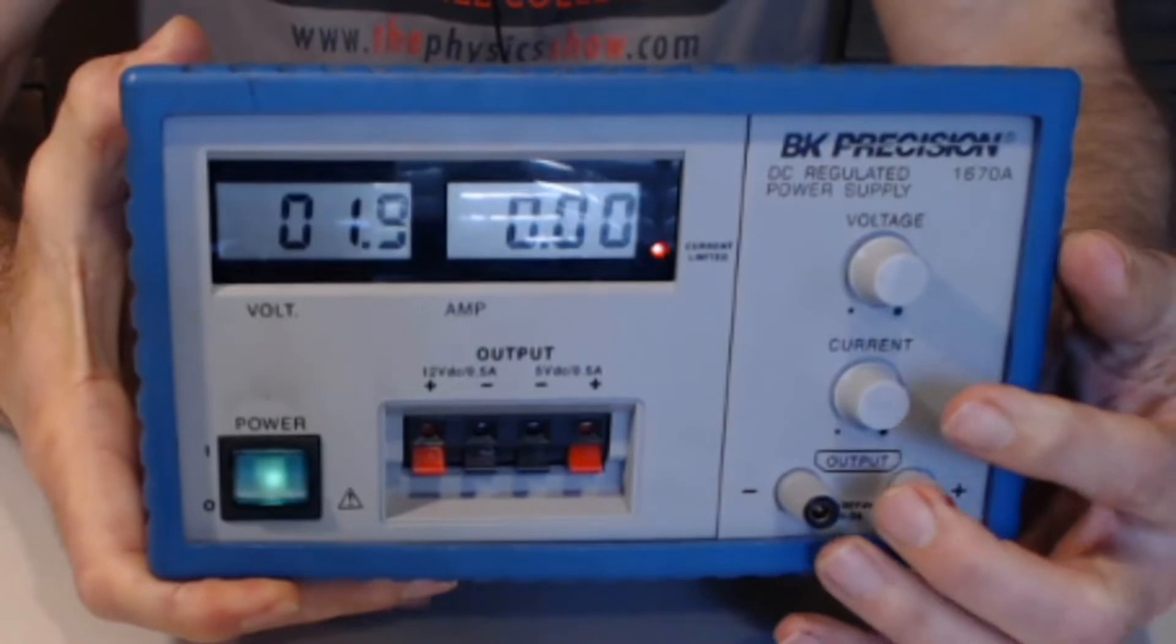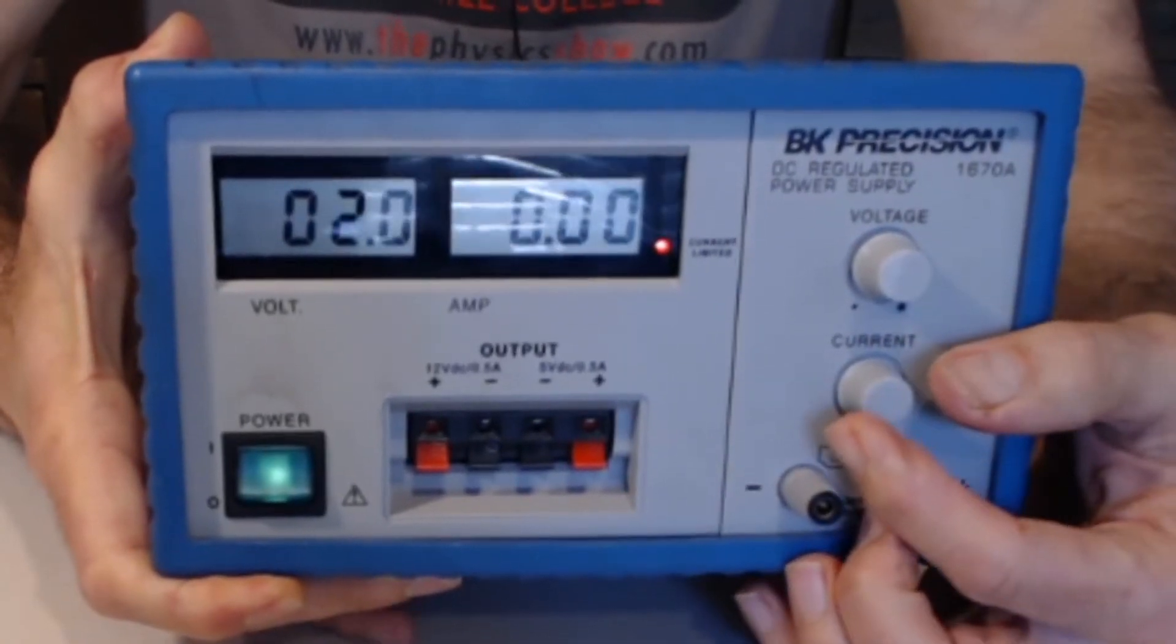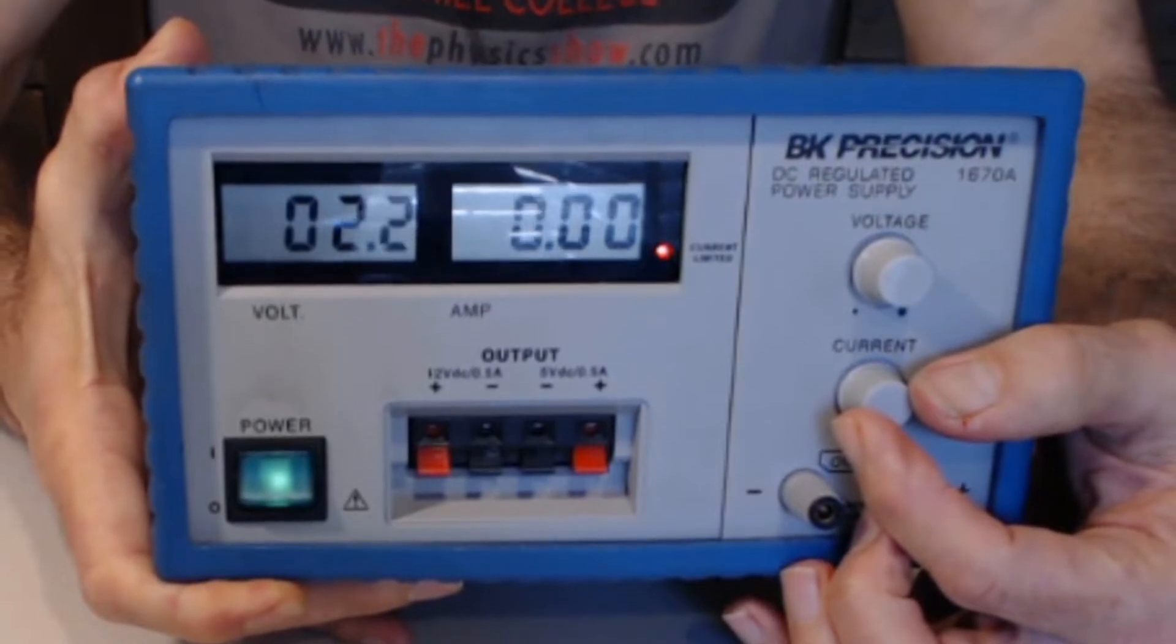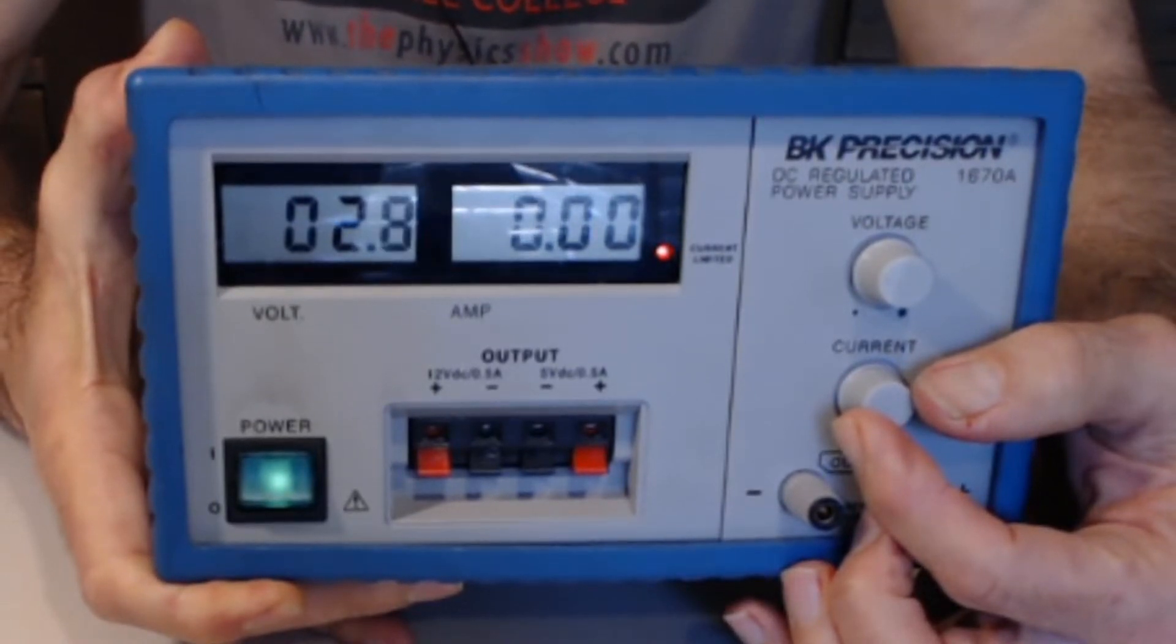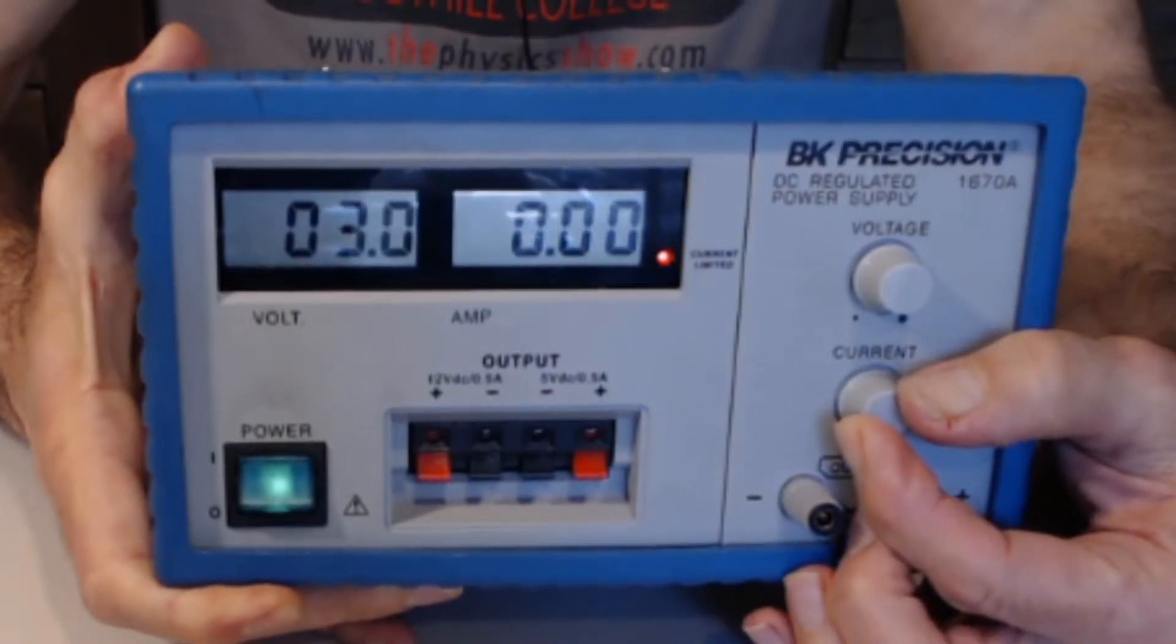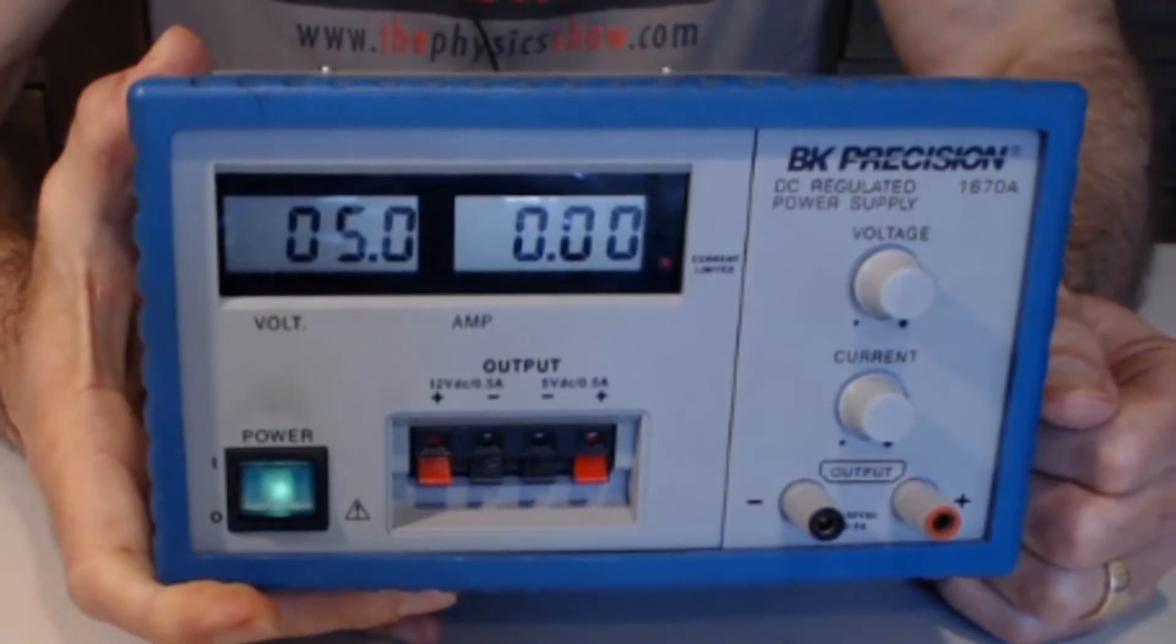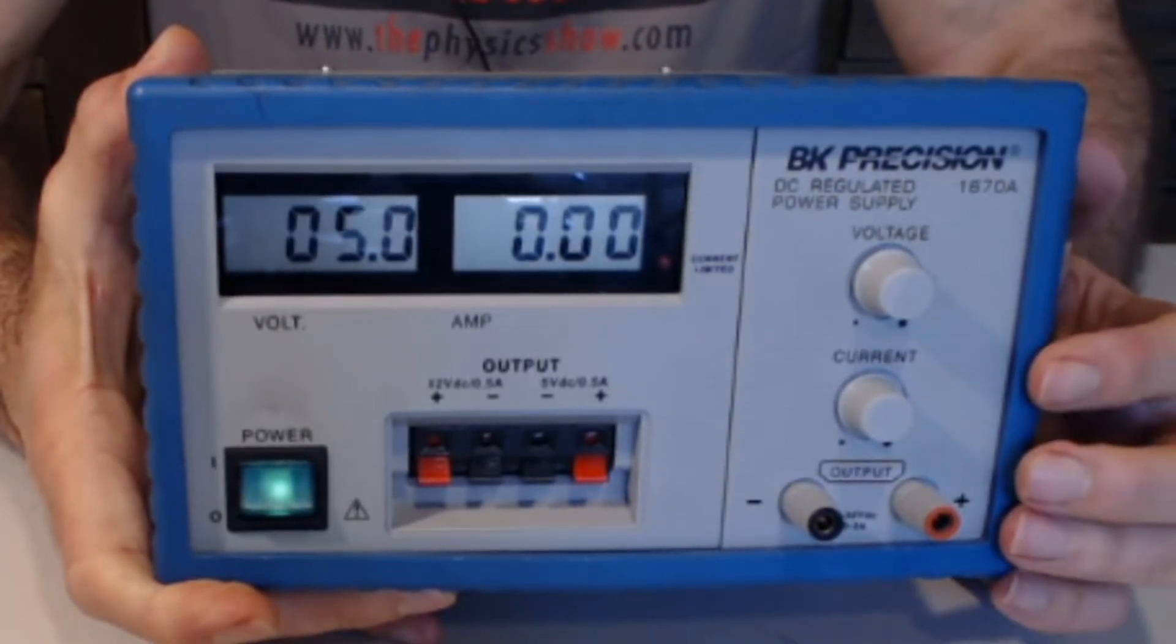There are two knobs here. We want to be controlling the voltage, not the current. So if we're current limited, this is there as a safety. So we turn it up a little bit until that red light goes off. Now we're not current limited anymore and it's set to five volts.